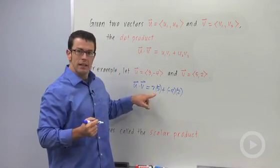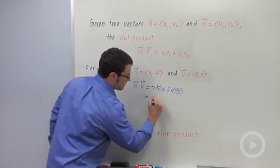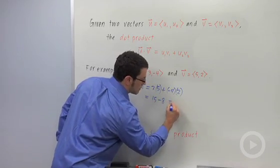Okay, this gives me 15 plus negative 8. 15 minus 8, 7.